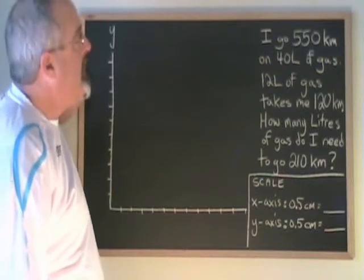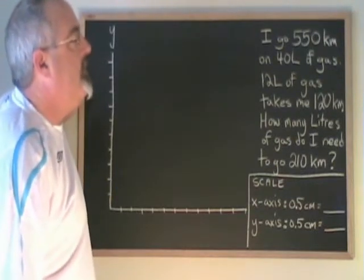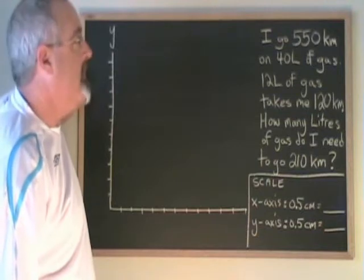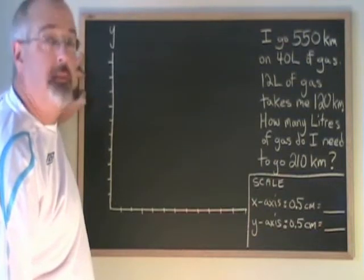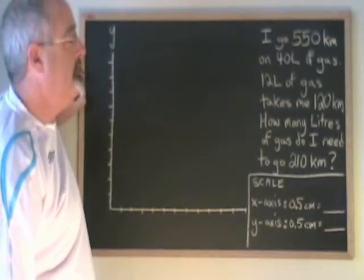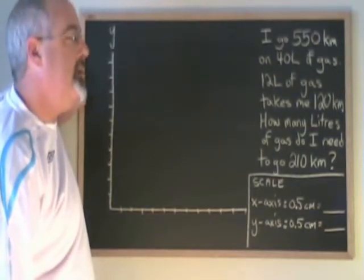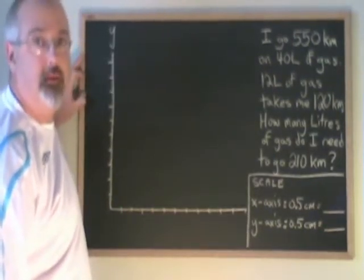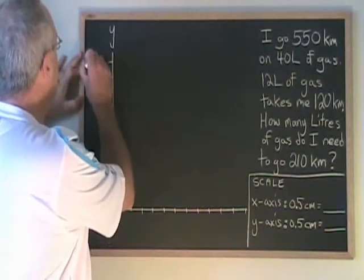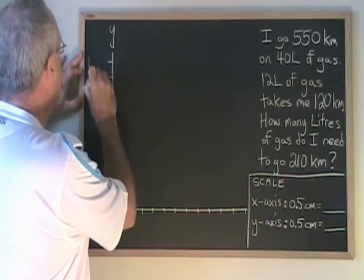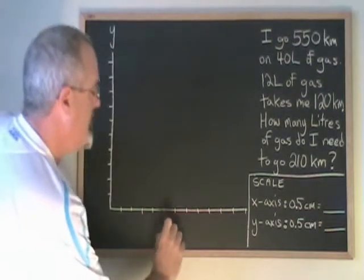In this example, I am told that I go 550 kilometers on 40 liters of gas. 12 liters of gas takes me 120 kilometers. How many liters of gas do I need to go 210 kilometers? I'll start by scaling my axes and I'm going to put the kilometers up here and the liters down here.